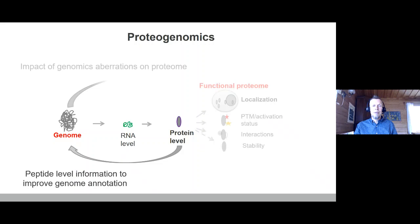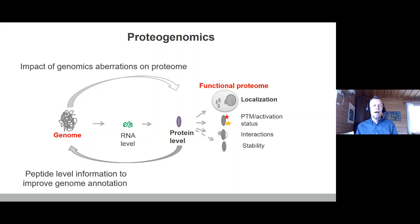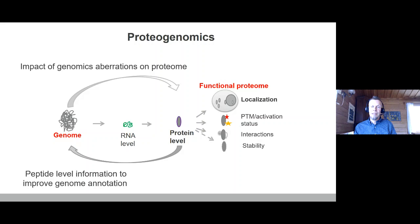More recently, the term proteogenomics has started to be used differently — to understand the impact of genomic changes on the proteome. In the literature you can also see transcriptomics compared to the proteome. In this sense, we don't only look at the impact of genome effects on quantitative proteomics, but also on functional proteomics: the protein-wide impact on proteome localization, PTMs, activation, stability, and so on. One key aspect is also taking genome sequence data and converting it into proteome databases to look at protein variants in the proteomic setting.